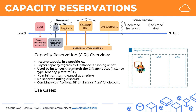The use case is whenever you need to ensure there's access to EC2 capacity no matter what — no matter how busy the Amazon servers. If you need to ensure that access, then you should be using capacity reservations.